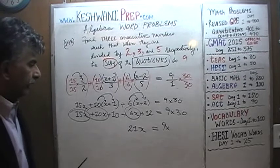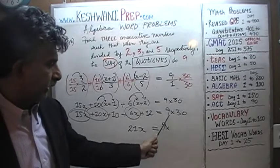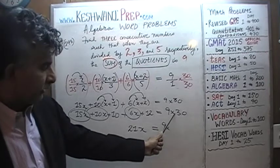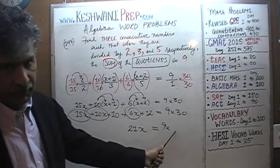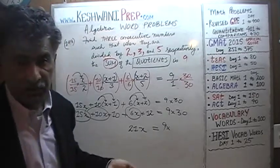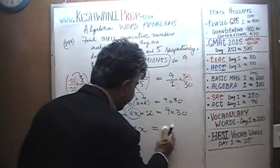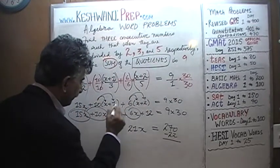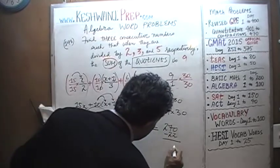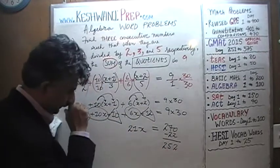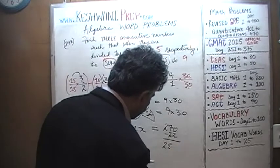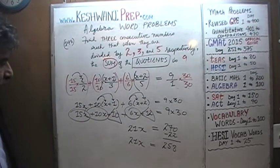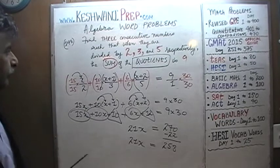Subtracting 22 from both sides: 270 minus 22 is 248. So 31x equals 248. At this point we need to solve for x.